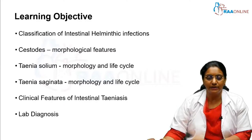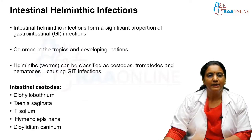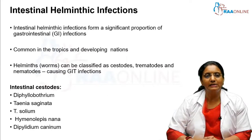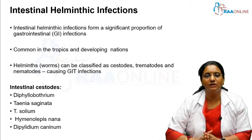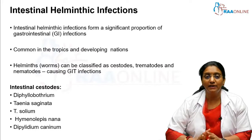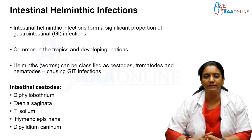We will quickly see the intestinal helminthic infections. As the name suggests, these are infections caused by helminths, meaning worms. These intestinal infections caused by worms are very common and form a very big proportion of GIT infections. Other causative agents can be bacteria, viral infections, protozoal infections, and of course worm infestations.